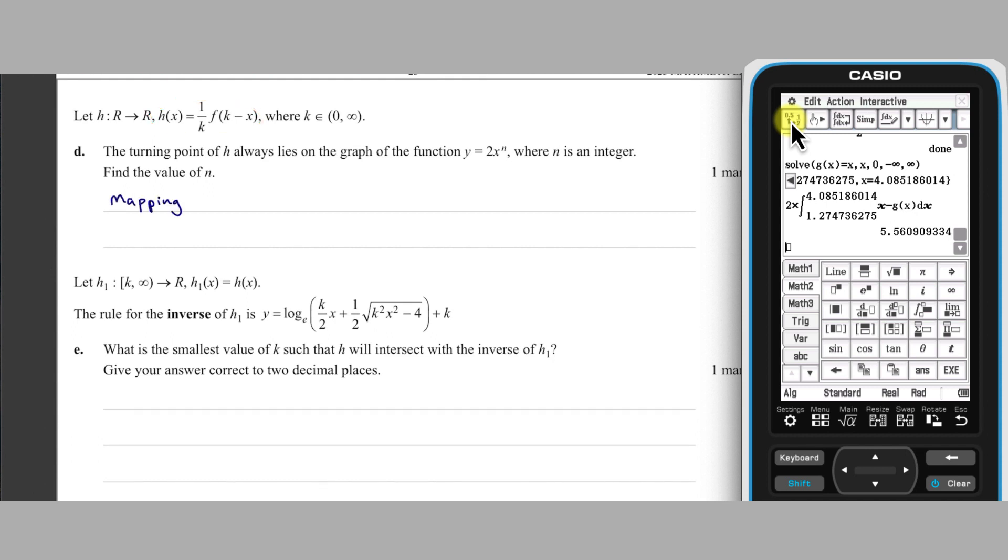We can use the mapping of F to H to map F's turning point at 0,2, dilating it down by factor 1 on K to 0,2 on K, translating it to minus K,2 on K, and then reflecting it to K,2 on K.